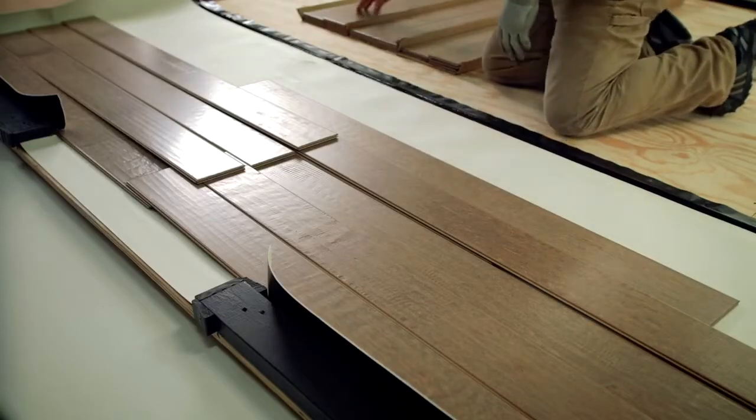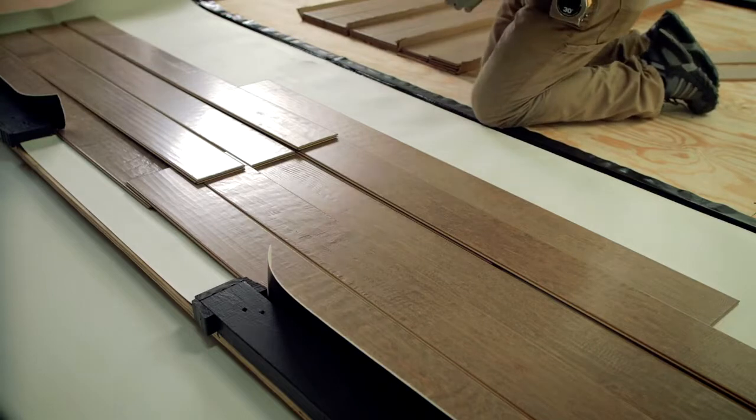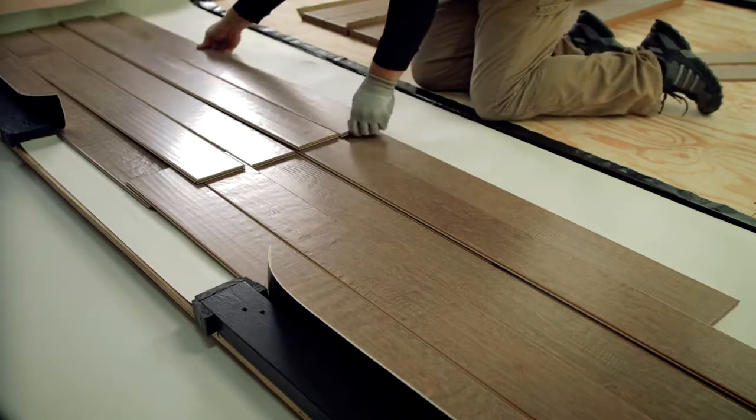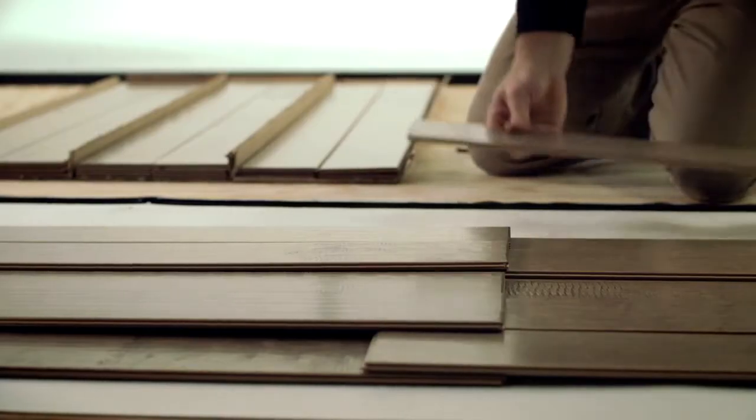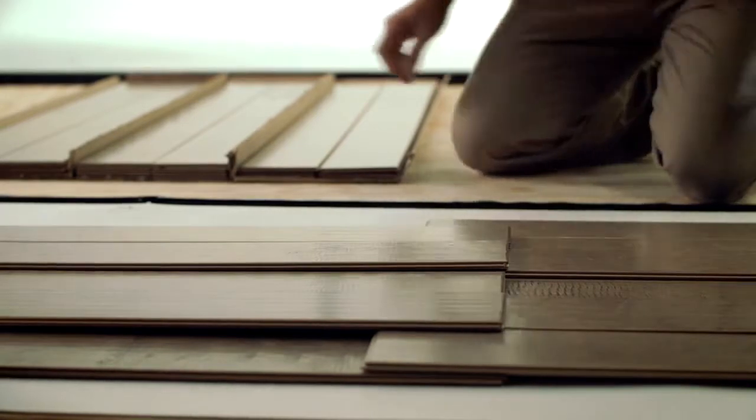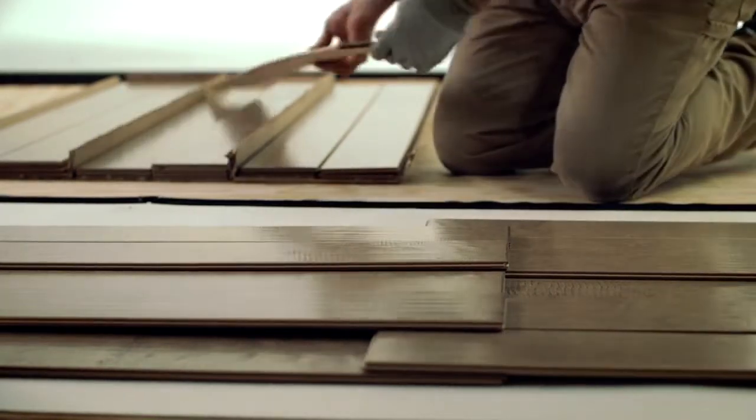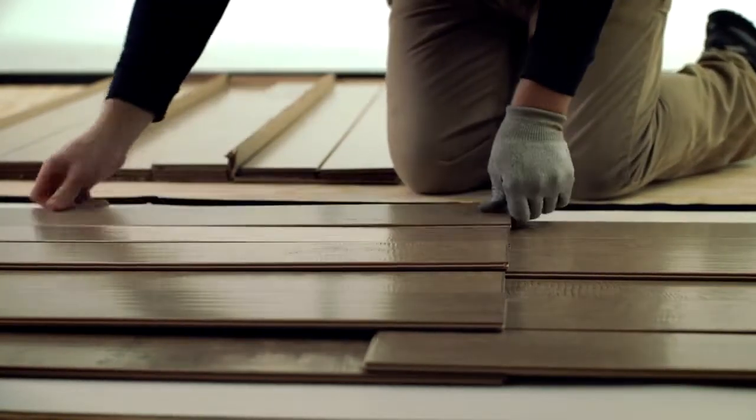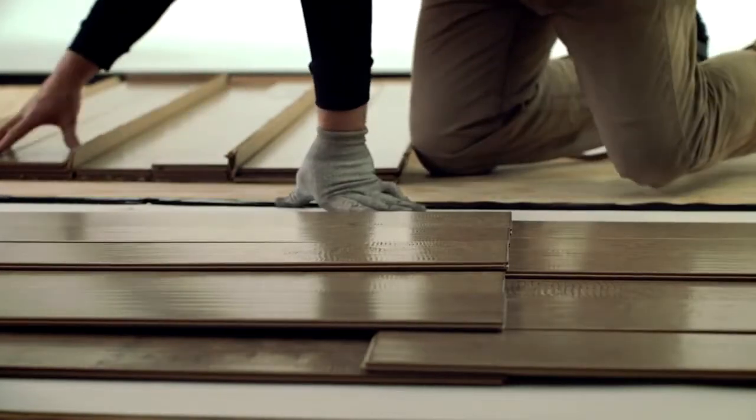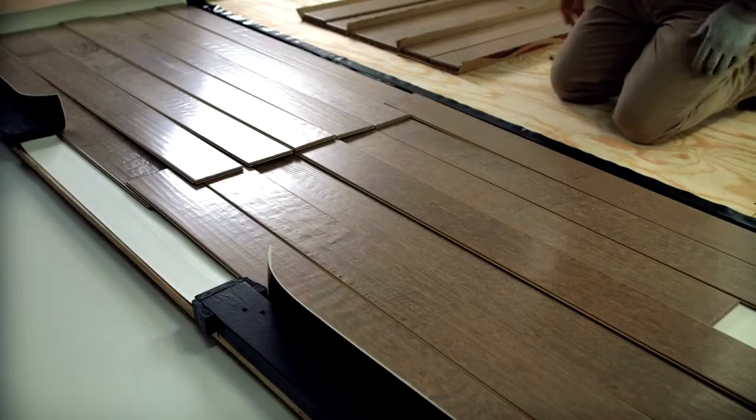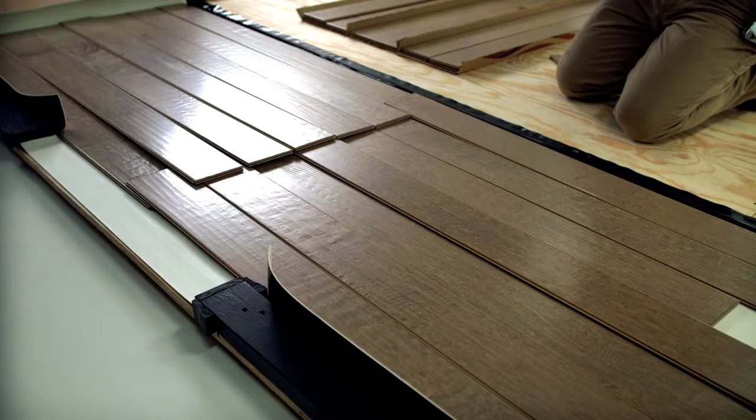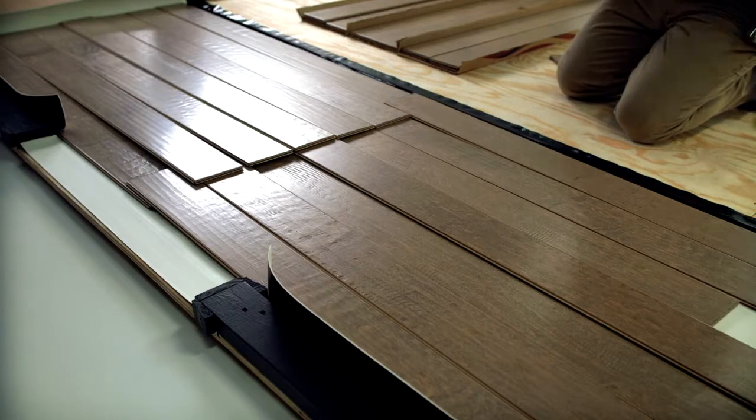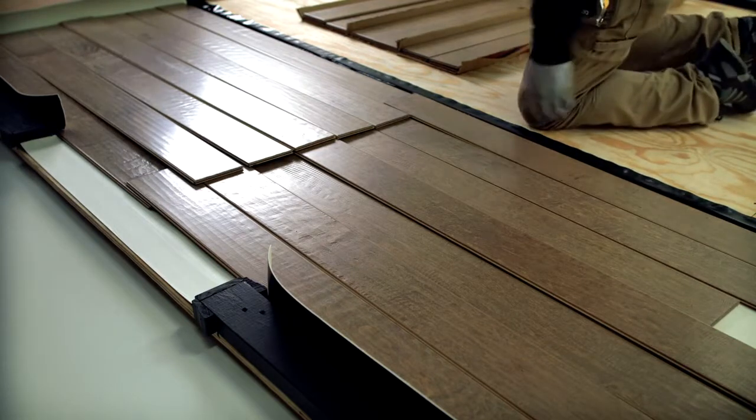Now it's time to begin laying out the flooring, also called racking the floor. Use random length planks from several different cartons. You'll want each row to use a variety of lengths to avoid a patterned appearance. Make sure the groove side of each plank faces your starting wall. It's important to stand back and examine the board arrangement in good light to make sure your layout has the look you want before you begin installation.